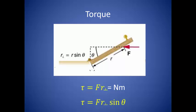If you come in at an angle, the sine of that angle is always less than 1, which means you have to apply more force to get the same amount of torque.